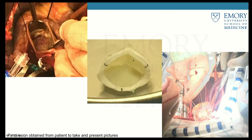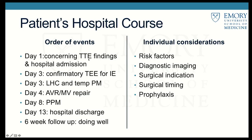A 25-millimeter bovine prosthetic valve was placed at the level of his aortic valve. Hospital course: day one, concerning echo findings and admission; day three, confirmatory TEE findings of endocarditis; he received a temporary pacemaker for complete heart block and a left heart cath for pre-op which was normal; day four, aortic valve replaced and mitral valve repaired; day eight, permanent pacemaker placed once blood cultures were negative; and in less than two weeks from presentation, he was discharged. On six-week follow-up, he's doing well.